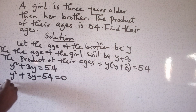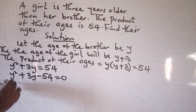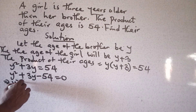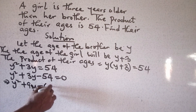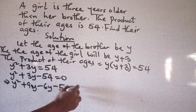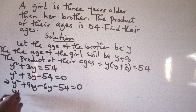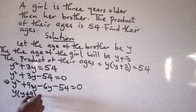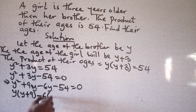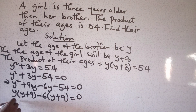Therefore Y squared plus three Y minus 54 equals zero. We factorize: Y squared plus nine Y minus six Y minus 54 equals zero.